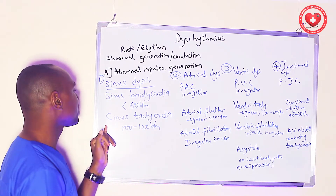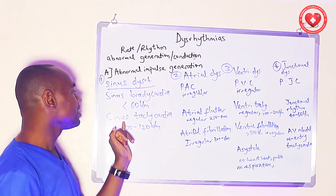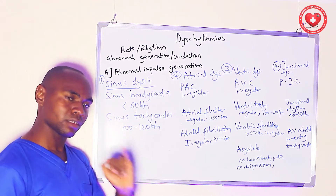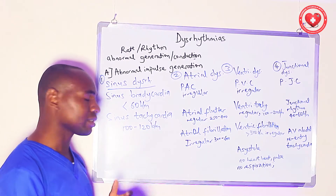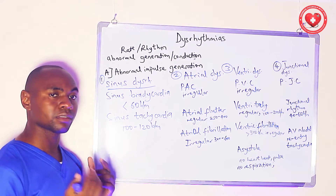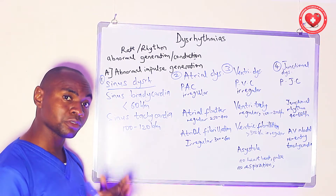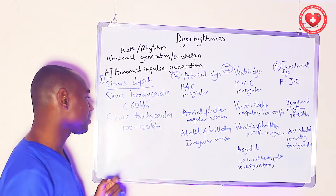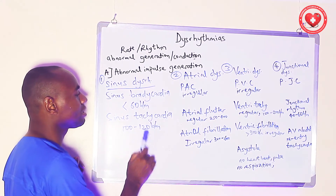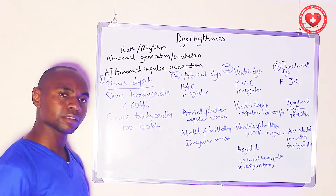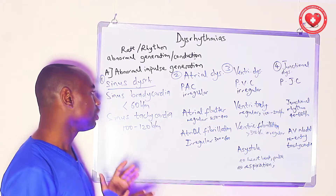The next one is sinus tachycardia. 'Sinus' meaning it originates from the SA node, and 'tachycardia' meaning fast heart rate — more than normal. The sinoatrial node releases electrical impulses faster than normal at a rate of 100 to 120 beats per minute. Both sinus bradycardia and sinus tachycardia are regular in nature.